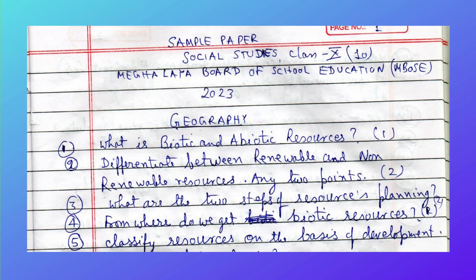What is the difference between biotic and abiotic resources? Differentiate between renewable and non-renewable resources — any two points. What are the two steps of resource planning, and from where do we get biotic resources?